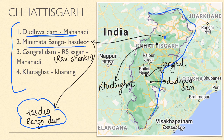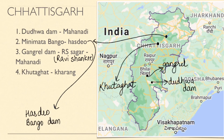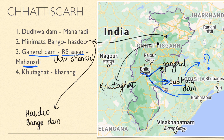Next is Chhattisgarh, which is very important. The first dam is Gangrel Dam, also known as Ravishankhar Dam, on the Mahanadi River. Then there is Dudhwa Dam. The last important dam in Chhattisgarh is Khuta Ghat Dam. There is also Hasdeo Bango Dam in Chhattisgarh.